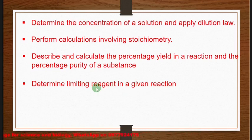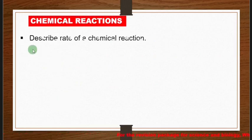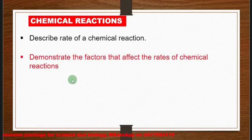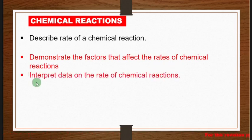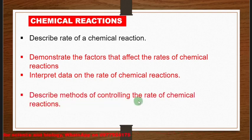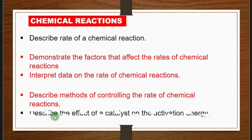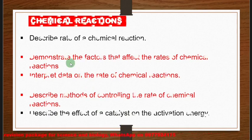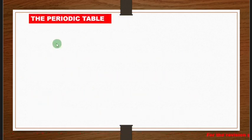You also need to determine the limiting reagent in a given reaction — this lesson is also present on my channel. Moving on to chemical reactions, you need to describe the rate of a chemical reaction, demonstrate the factors that affect rates of chemical reactions, interpret data on the rate of chemical reactions, and describe the effects of a catalyst on activation energy.